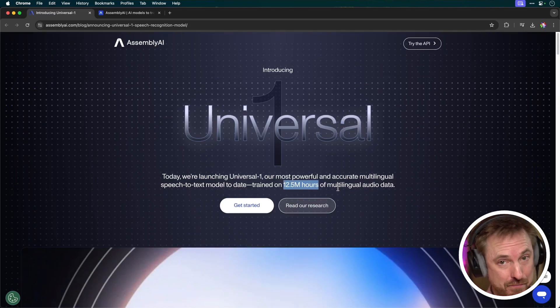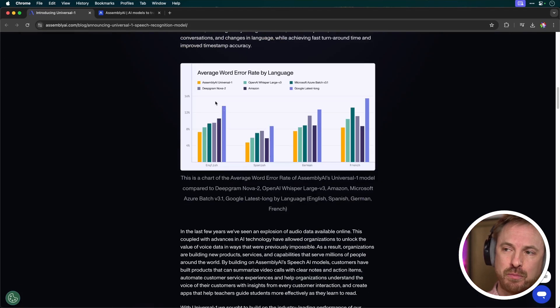Next up, a superior transcription tool for content creators. Whether you're a podcaster looking for the most accurate transcription or a YouTuber wanting to get a really cool transcript for your YouTube videos, Universal One from Assembly AI is reported to be better than OpenAI's Whisper, and it comes with less hallucinations and lots of multilingual capabilities. It's been trained on 12.5 million hours of multilingual audio data. It has some pretty good benchmarks, making it the best versus OpenAI's Whisper Large version 3, Microsoft's models, Deepgram, Amazon, and Google — all trailing behind this new AI transcription tool. I'll have a link down below in the description to try this out for yourself in Assembly AI's Playground.